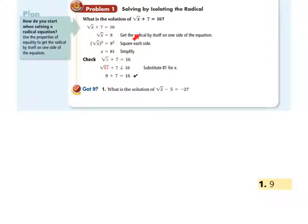We've seen this example already in your vocab part. Square root of x plus 7 equals 16. You can subtract out that 7 — square root of x equals 9. Don't tell me it's 3. You're not looking for the square root of 9; you're looking for what number has a square root of 9. So squaring is the opposite of taking the square root. We find that we can plug in 81 here. So square root of 81 satisfies this when you do the check. Make sure you do that.